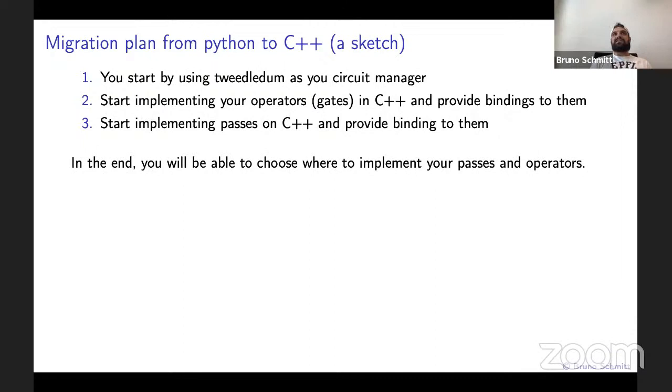In the end, you're able to choose where you are implementing the passes and the operators. In this transition, you might have passes that are completely translated to C++, which will be faster than passes that only happen in Python. The passes in Python can understand operators from C++. But if you have a pass in C++, it cannot understand operators that you're defining in Python. So this also pushes you to go to the lower level, to the system level.